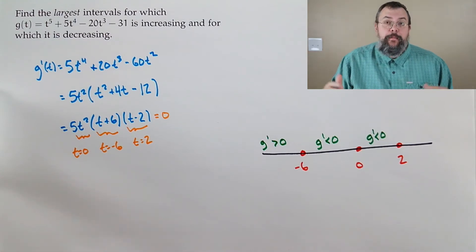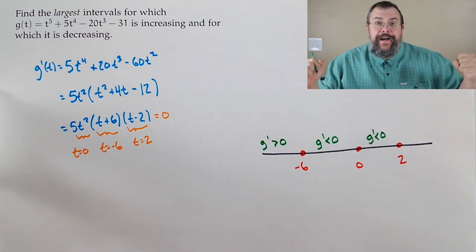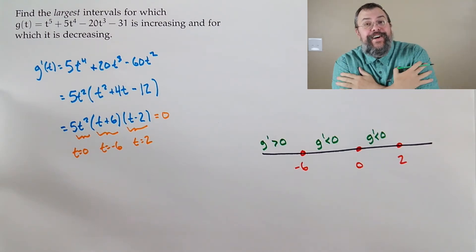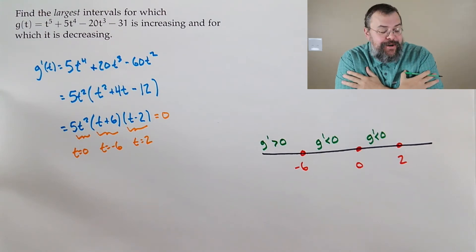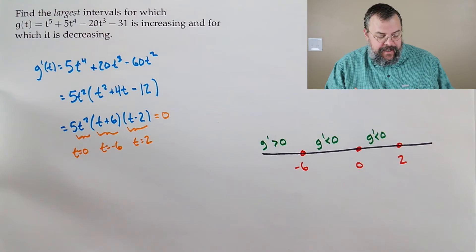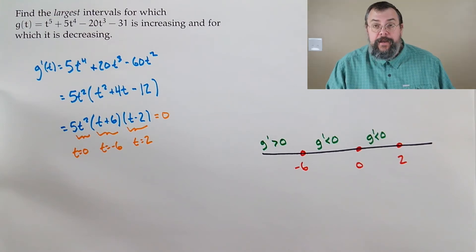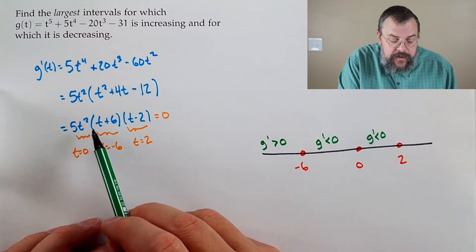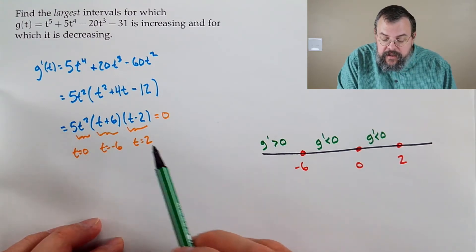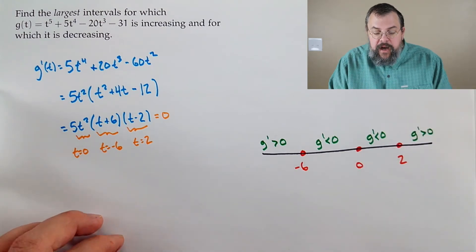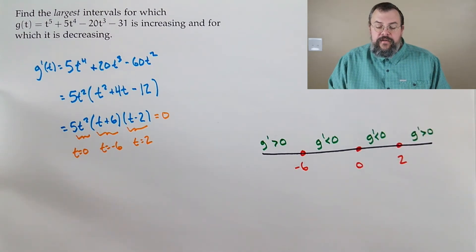Above 2, pick t equals 3 — something easy to compute; we love ourselves. 3 plus 6 is positive, 3 minus 2 is positive, so positive, positive, positive. We're back to having the derivative being positive, which means our function is increasing.